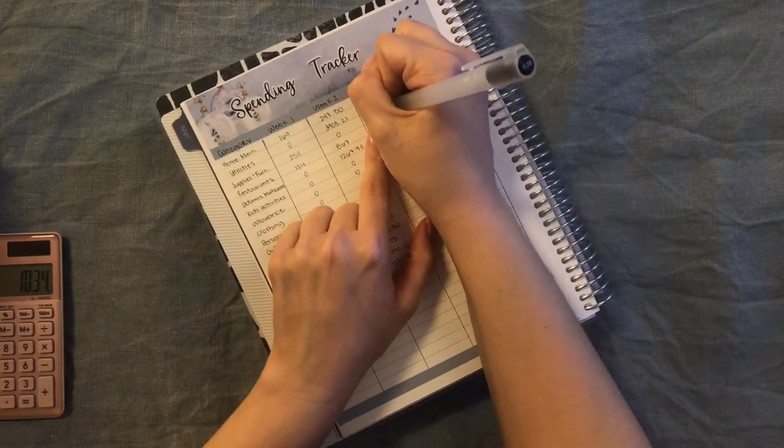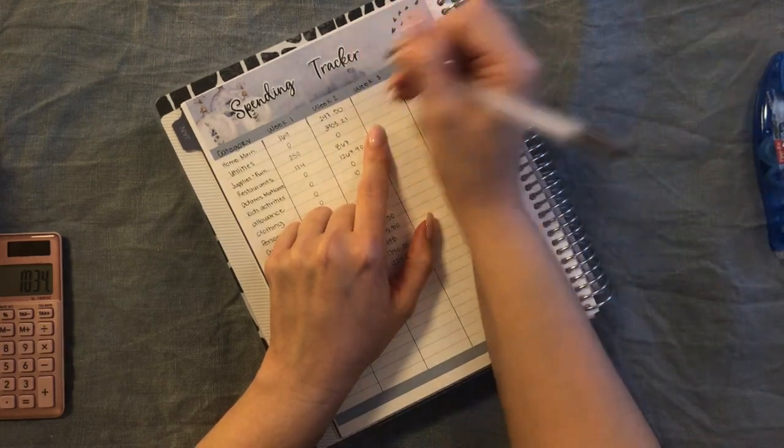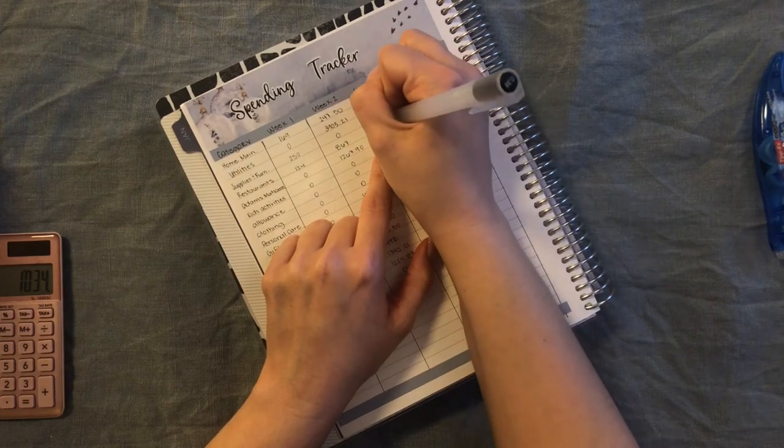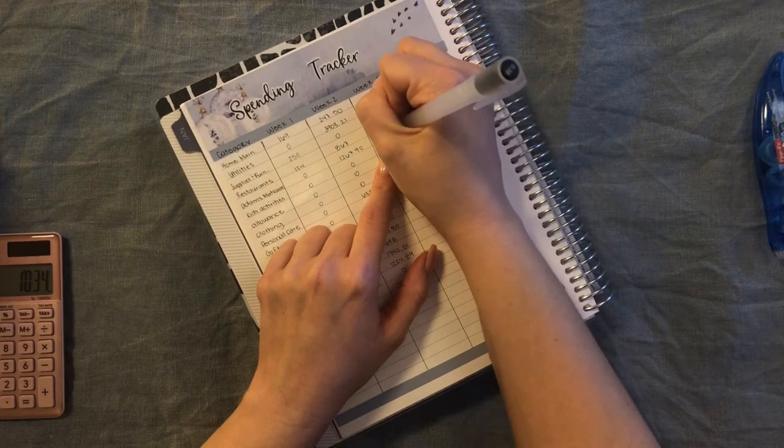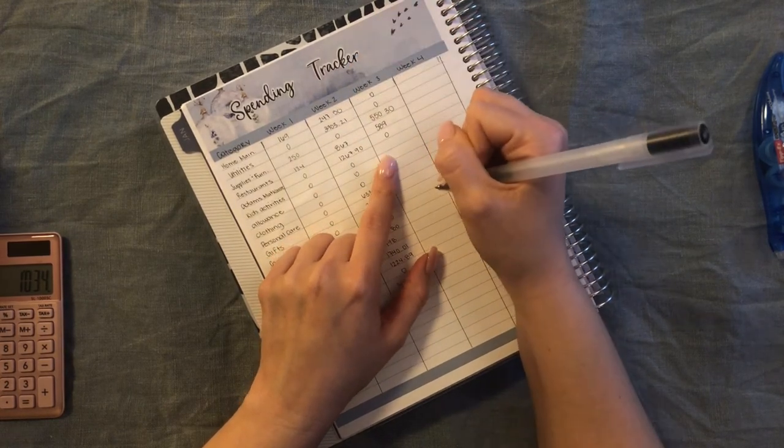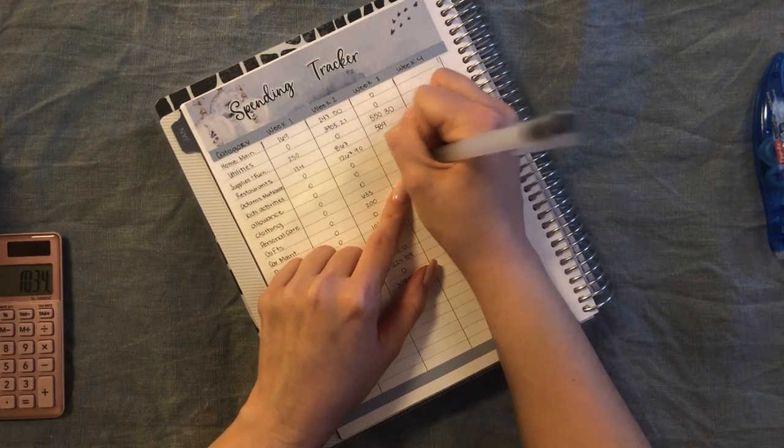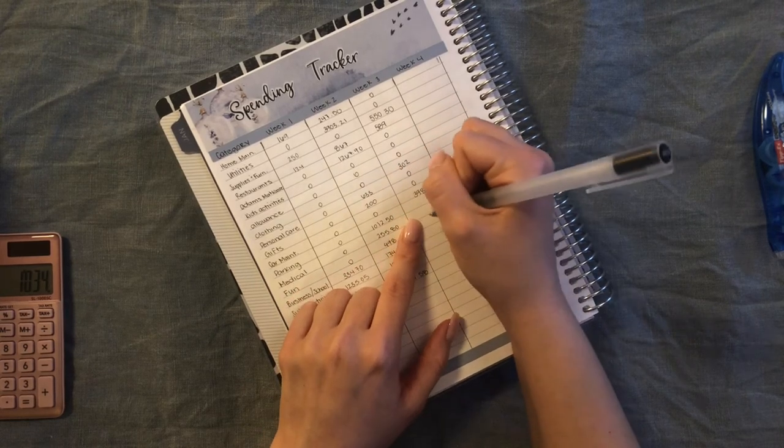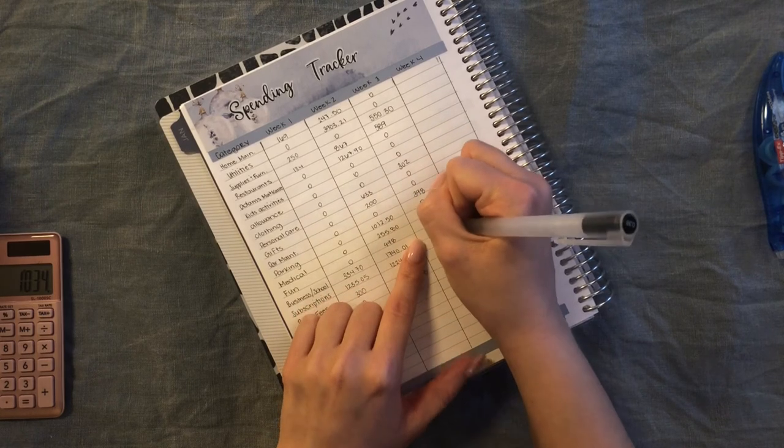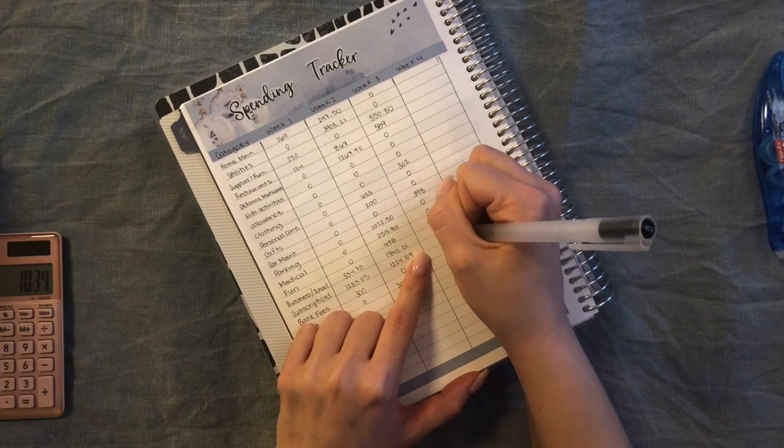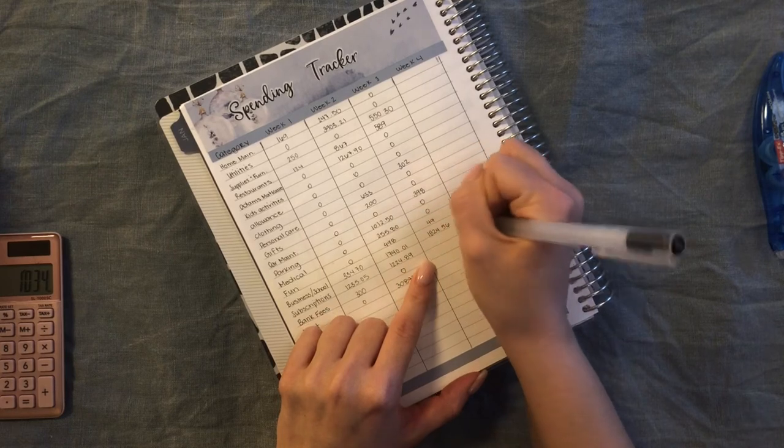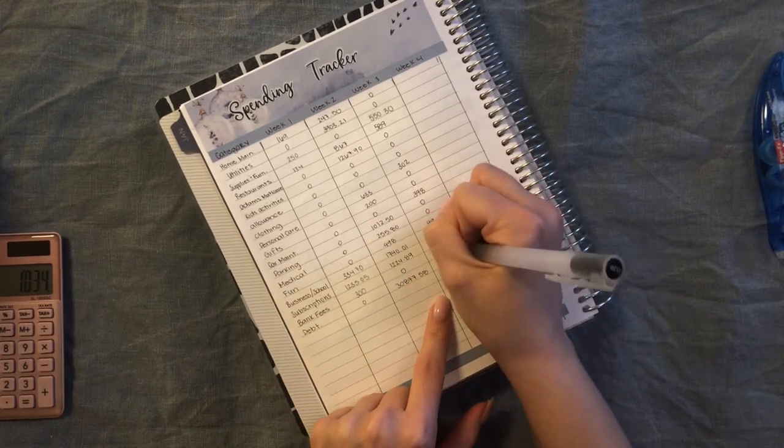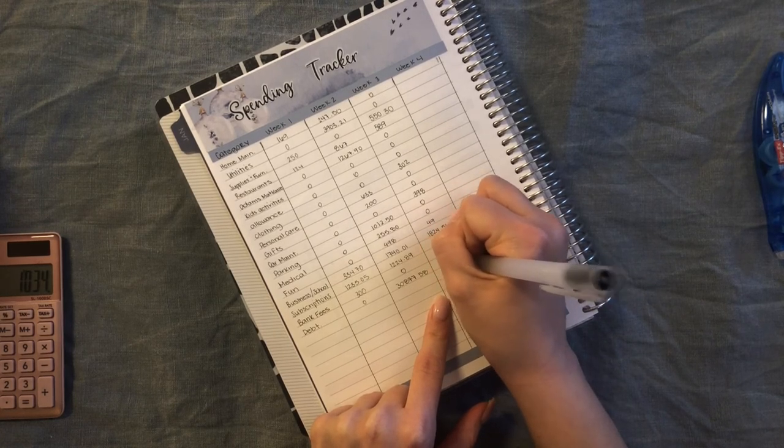For supplies and furniture we spent $550.30. For restaurants we spent $589. Adam's Montcosa, zero. Utilities, zero. Home maintenance, zero. Kids activity, zero. Allowance, zero. $302 for clothing. Zero for personal care. Zero for gifts. $396 on car maintenance. Zero for parking. Zero for medical. $49 to rent a movie for fun. $1,824.56 for business and school. $548.25 for subscriptions. Zero for bank fees and $385.84 on debt.